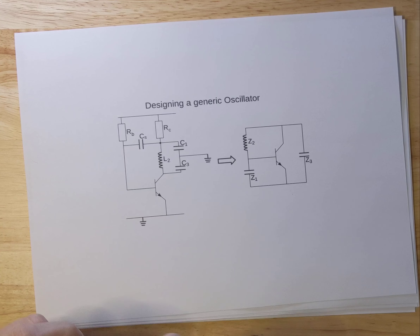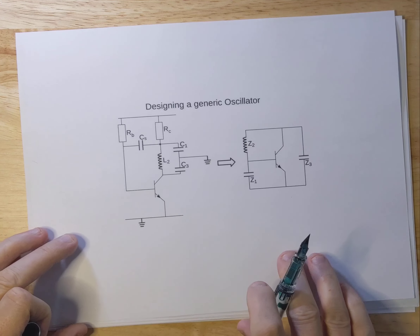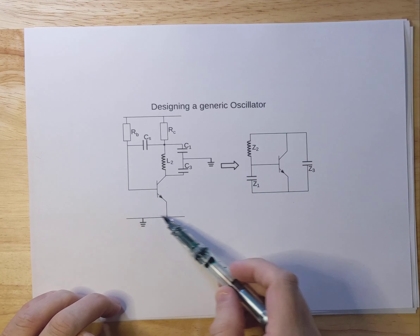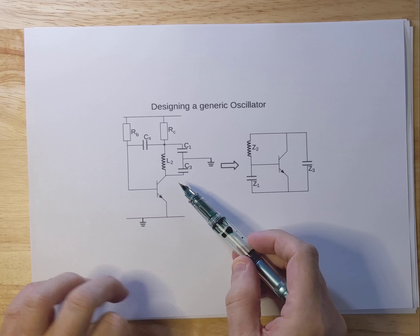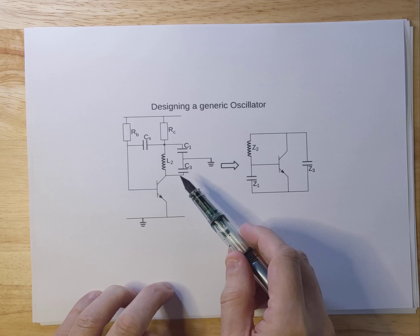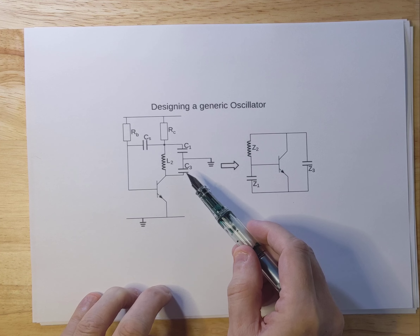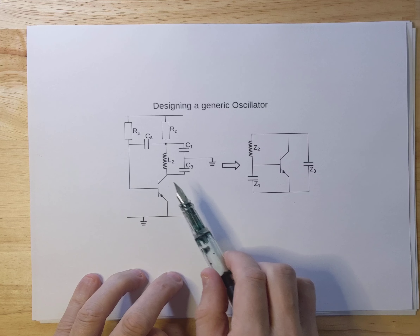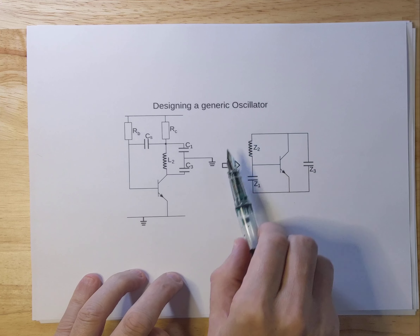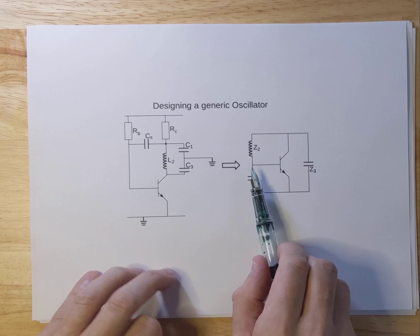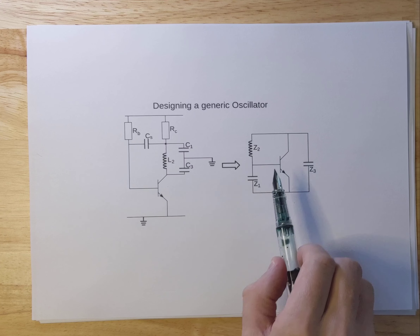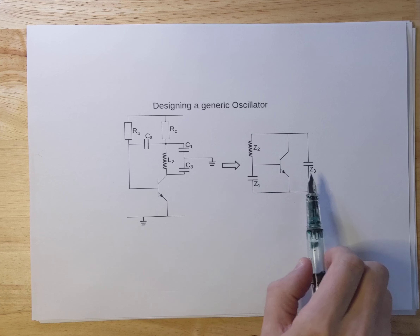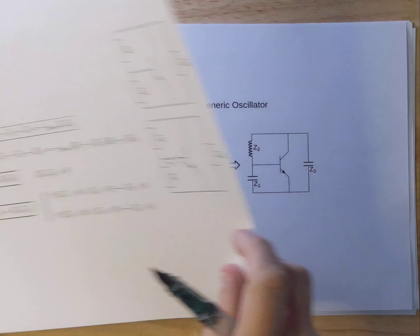Today I'm going to talk about how to design a fairly generic oscillator. You see an implementation of an oscillator on the left hand side over here. This is the one we're going to analyze in detail, but this approach can be used for many different types of oscillators. This is just one implementation. The small signal representation of the oscillator is on the right, and we will see how we get to that. This is the schematic we're going to use to analyze what the restrictions should be on the various parts to get oscillation.